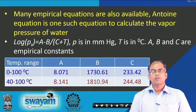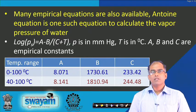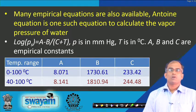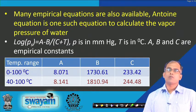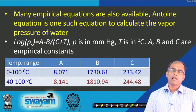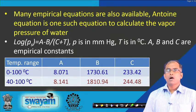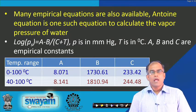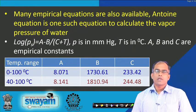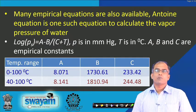For water, two sets of Antoine constants are provided: one valid for the temperature range 0 to 100°C, and another for 40 to 100°C. Using these constants in the Antoine equation gives P_s, the saturated vapour pressure of water at a given temperature T.